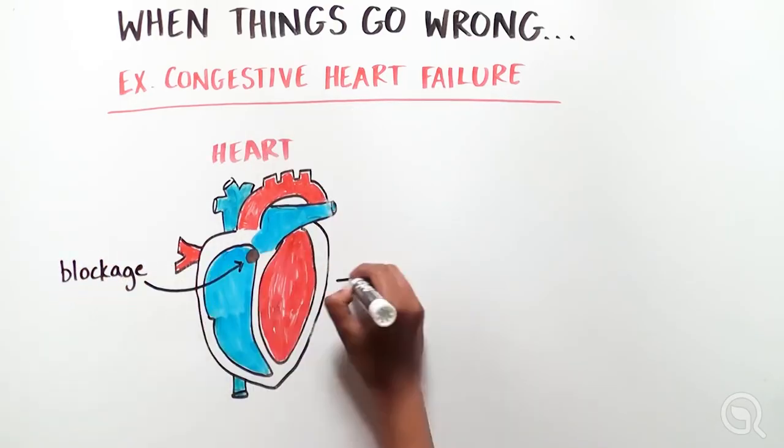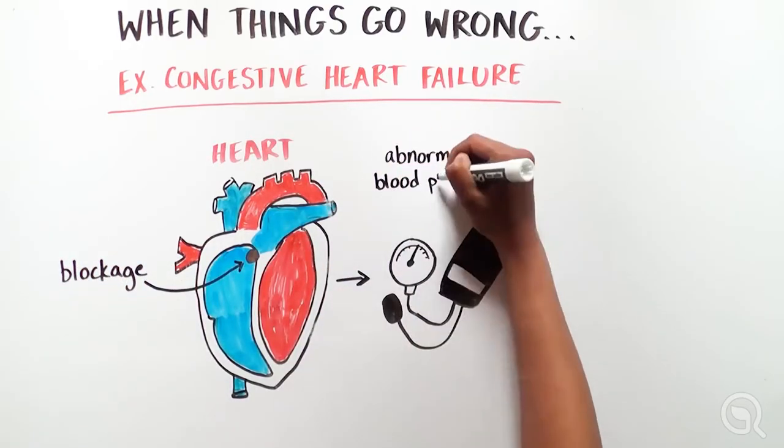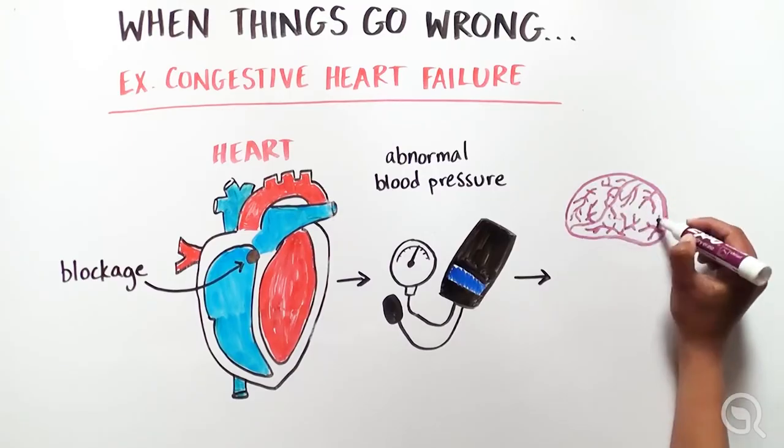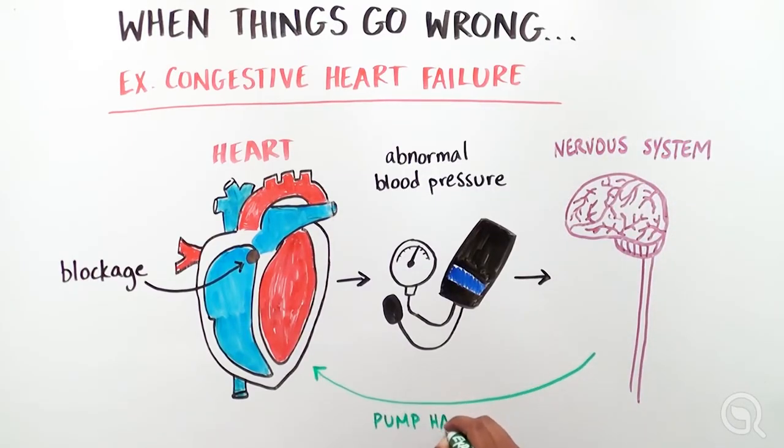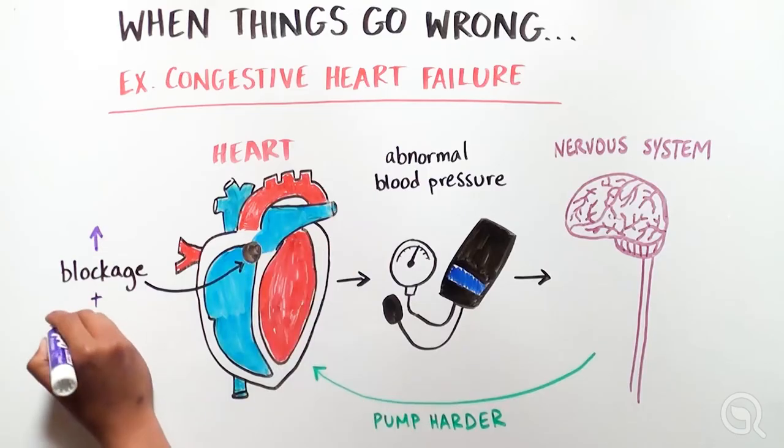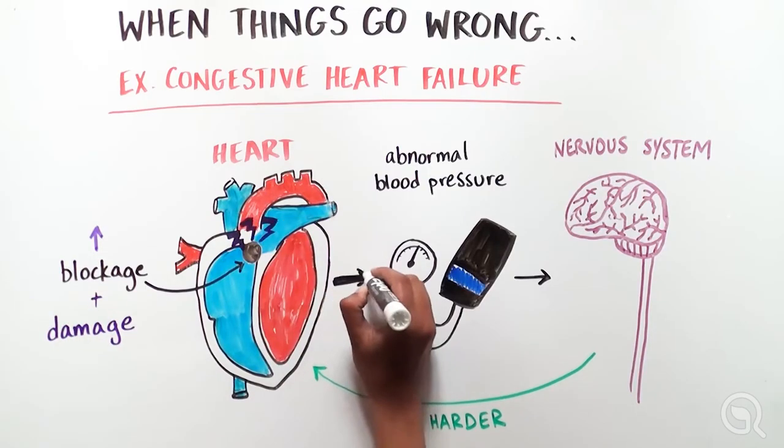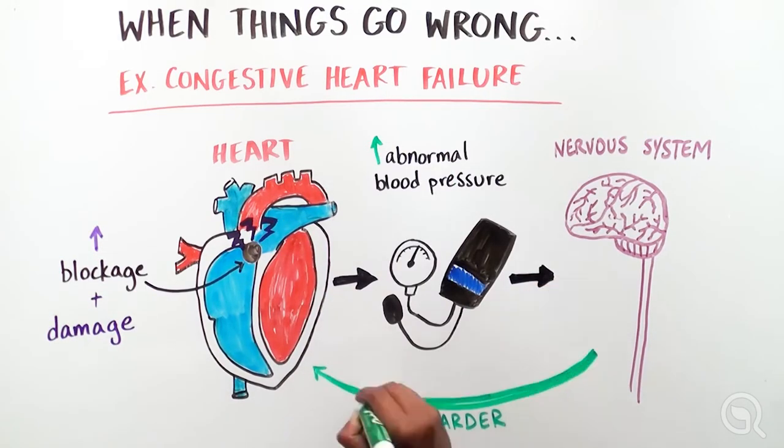Here, heart blockages lead to abnormal blood pressure, which the nervous system detects and attempts to correct by sending signals to the heart to pump harder. This leads to more heart damage, which further disrupts blood pressure, and so on.